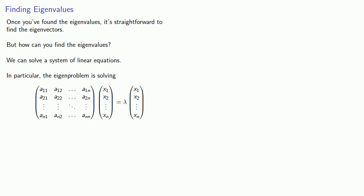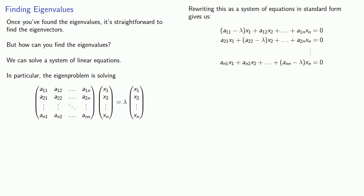Rewriting this matrix equation as a system of equations in standard form gives us the corresponding coefficient matrix, which we can write as A minus lambda times the identity matrix.